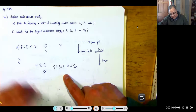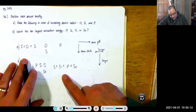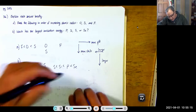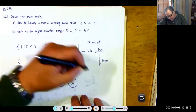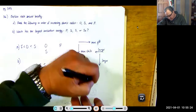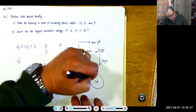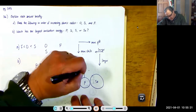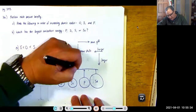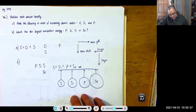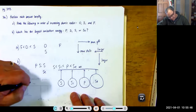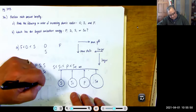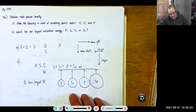They're actually asking for ionization energy, not radius — but we can use size to determine it. Ionization energy increases as atomic size decreases. So for sulfur, silicon, phosphorus, and selenium: the smallest atom (sulfur, within period 3) has the highest IE. The order of increasing ionization energy would use the same periodic trends.